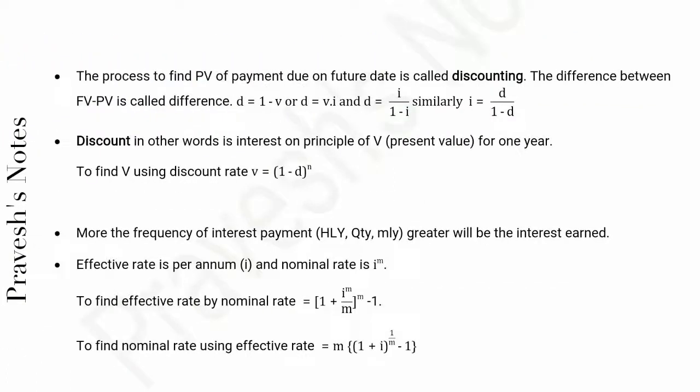The process to find present value of payment due on future date is called discounting. The difference between FV and PV is called difference. d = 1 - v or d = vi and d = i/(1 + i), similarly i = d/(1 - d).